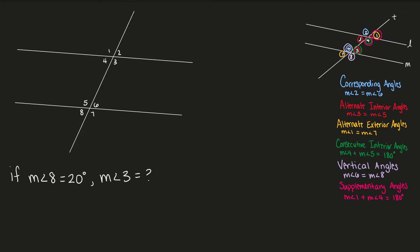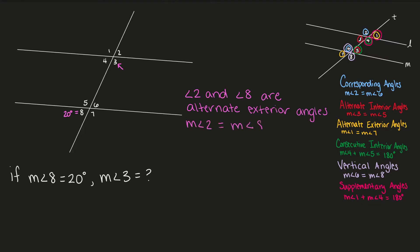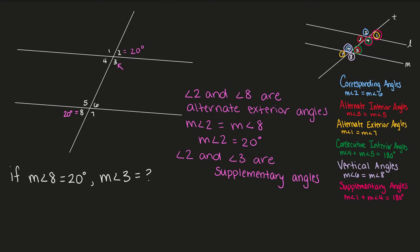If the measure of angle 8 is equal to 20 degrees, then what is the measure of angle 3? In order to find the measure of angle 3, we need to take two steps. First, we can see that angle 8 and angle 2 are alternate exterior angles, which means angle 8 and angle 2 are congruent. So if angle 8 equals 20 degrees, then angle 2 equals 20 degrees. Angle 2 and angle 3 are supplementary angles, and supplementary angles add up to give us 180.